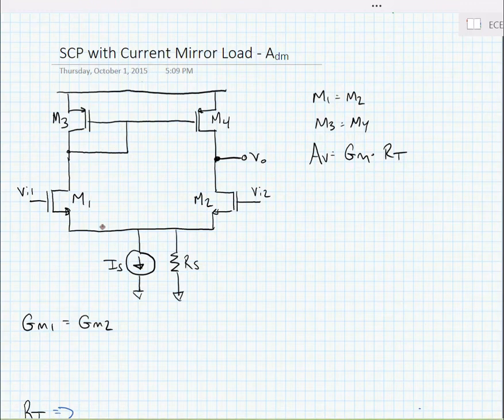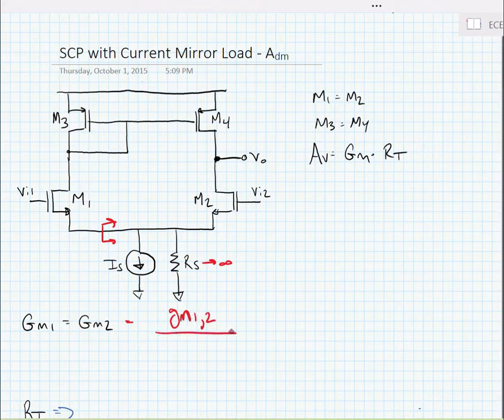we need to find the resistance that the source of M1 sees. So we're going to look from the source of M1 towards M2. We know that we have some tail current source that's pulling current through these two devices, and we've generally been treating RS like it's a very big resistor. Now, this being the case, we know that looking towards the source of M2 we would see 1 over GM2. And we could write that big GM1 is equal to big GM2 is equal to GM1 or 2 divided by 1 plus GM1 or 2 divided by GM1 or 2.